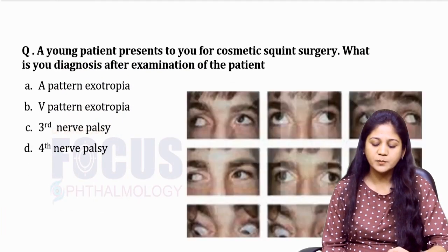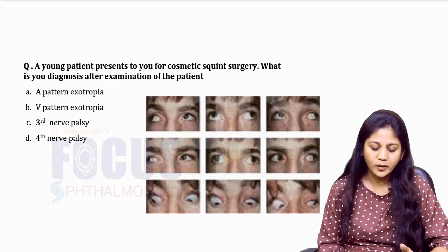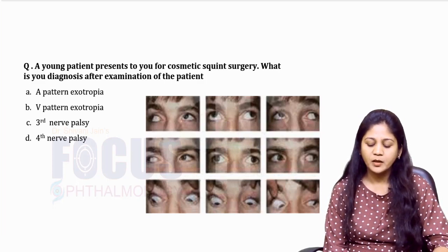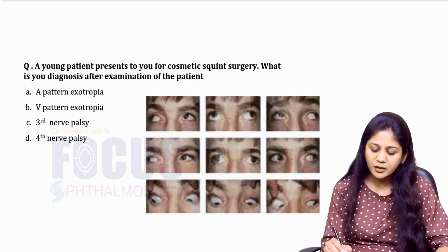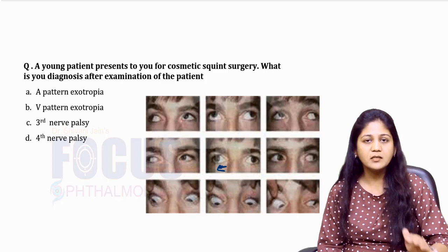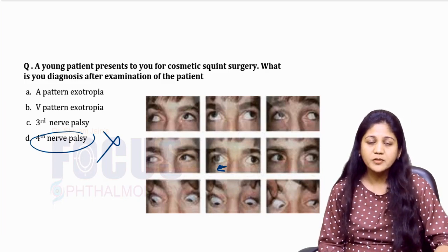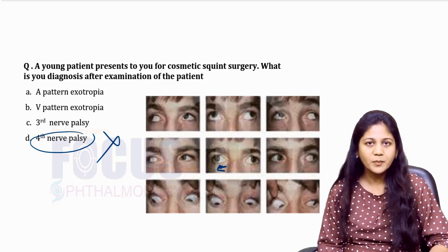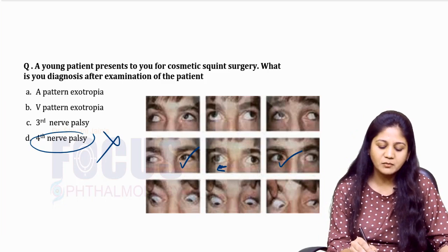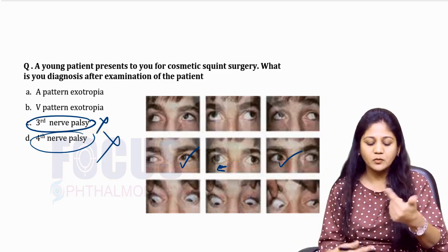Now let us solve a question related to this. You have been given 9 diagnostic positions of gaze. A young patient presents for cosmetic squint surgery — what is your diagnosis? In primary gaze, there is slight right exotropia. There could also be exotropia in third nerve palsy, so let us check. The patient's right and left medial recti are absolutely okay, so third nerve palsy is already ruled out.